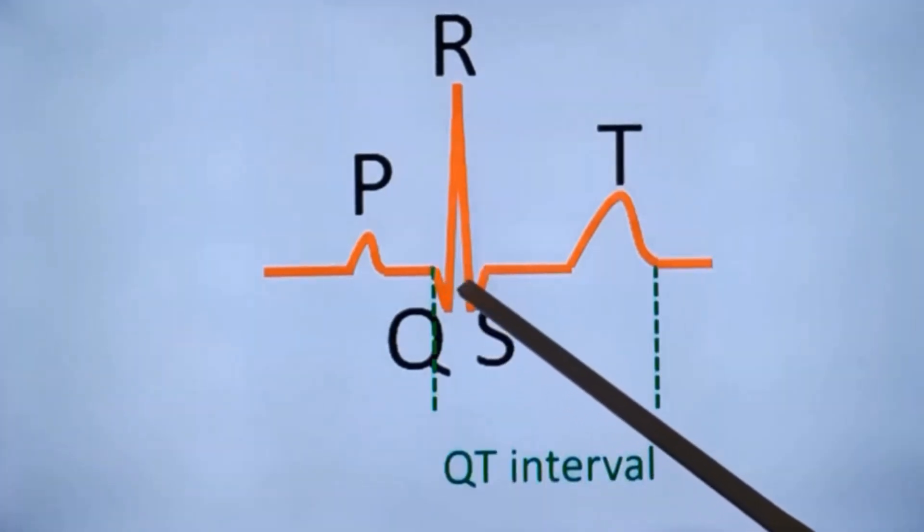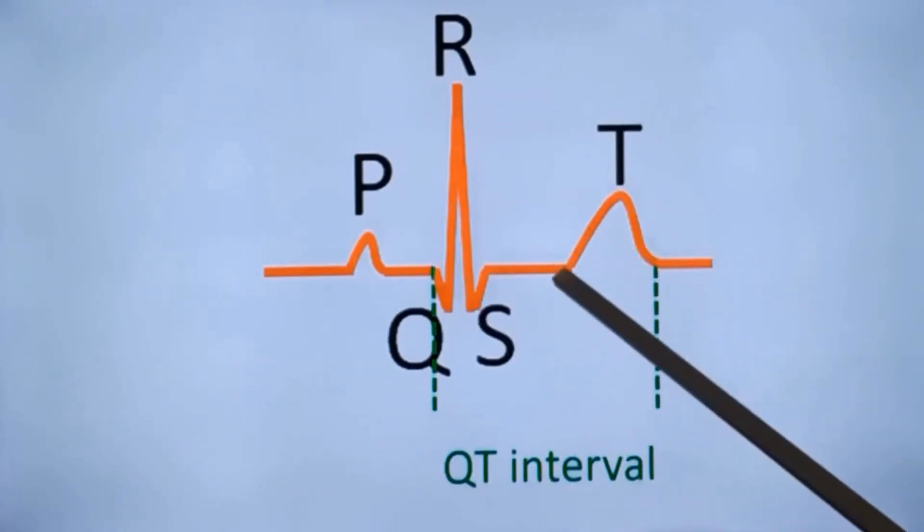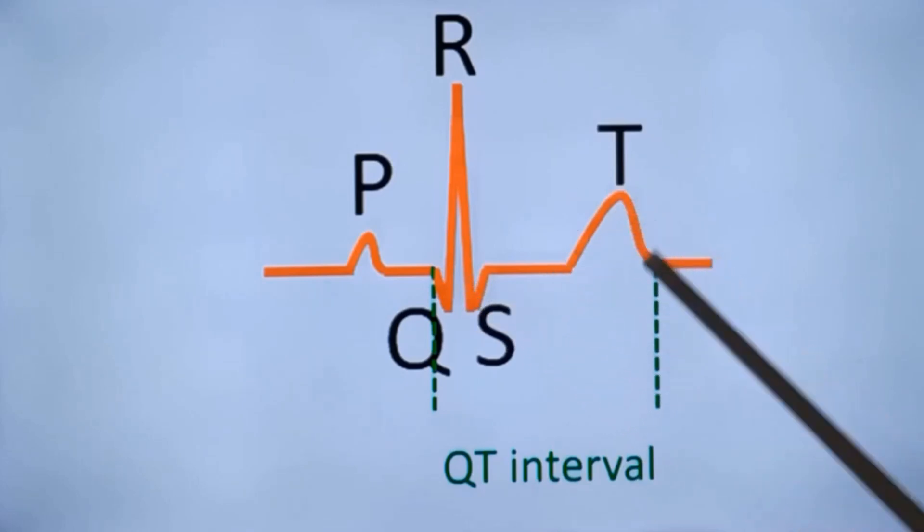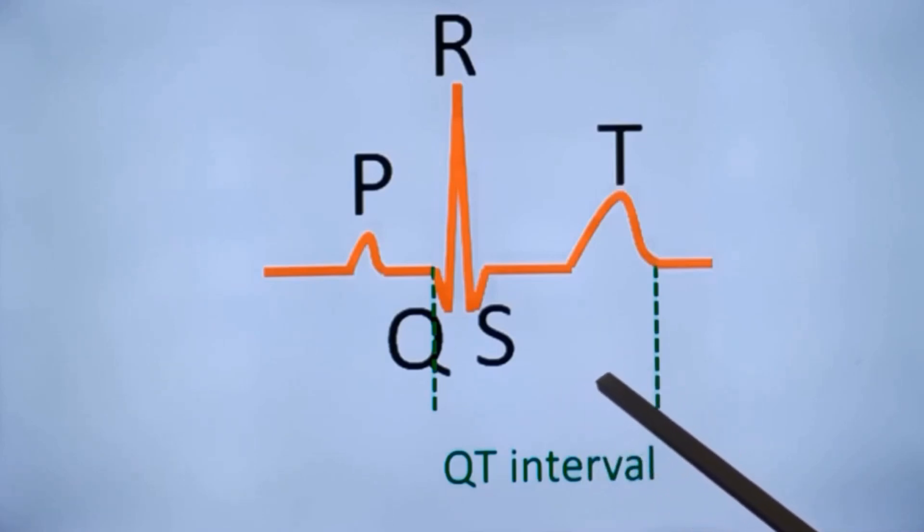QT interval is from the onset of the QRS complex to the end of the T wave. This represents the ventricular depolarization as well as repolarization. Measurement of QT interval is very important as QT prolongation can predispose to serious life-threatening ventricular arrhythmias. That is why it is now mandatory. It is a regulatory requirement for any new medication being introduced for having QT testing. It should be shown that there is no QT prolongation or if at all it is there that should be minimal. So QT interval is assessed for any new drug and it is supposed to be a billion dollar industry measurement of QT interval for the large number of drugs being tried. QT prolongation leads to torsades de pointes which is a very serious arrhythmia.